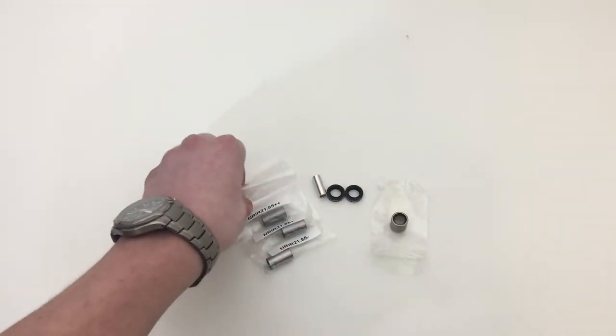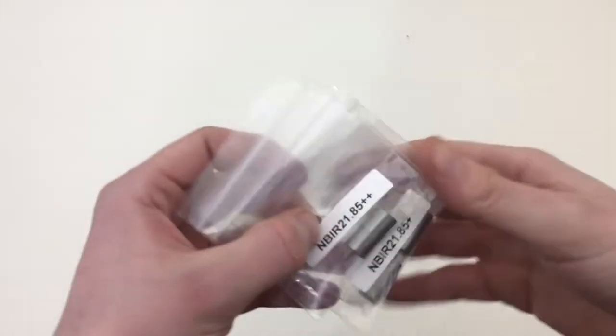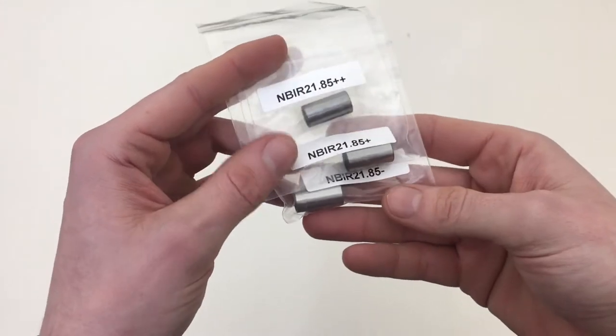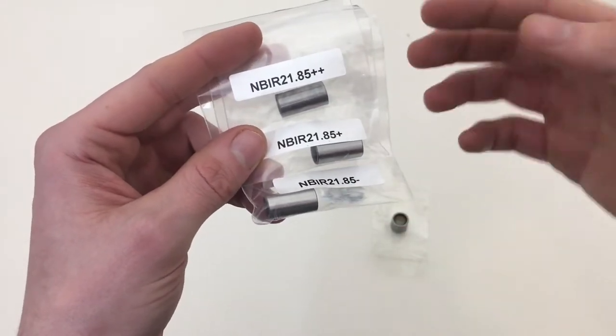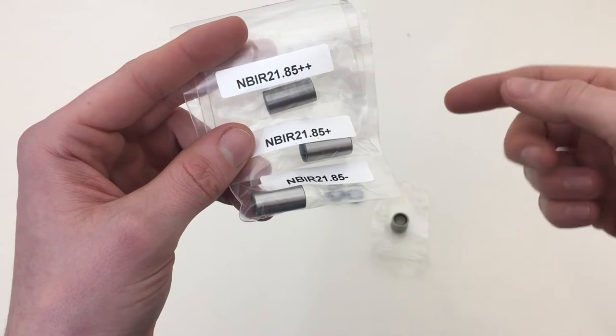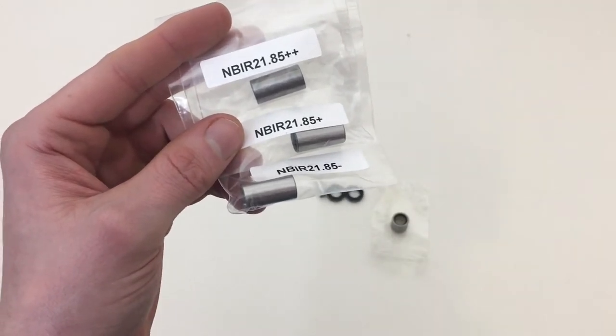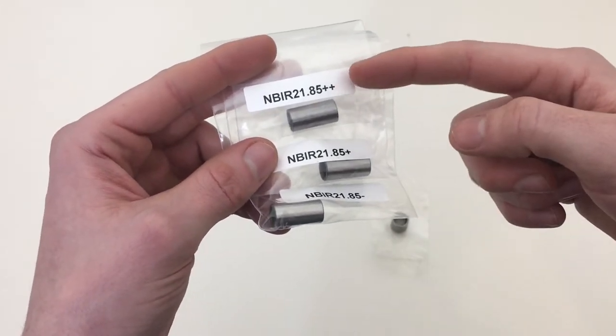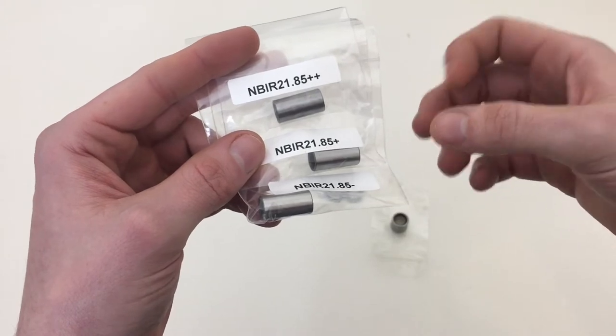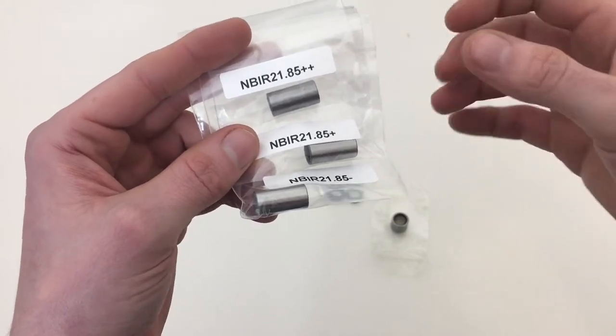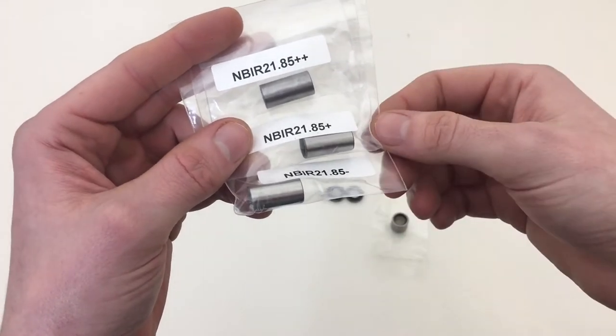Then you've got the inner pins or axles. You can see there's three of them. The reason you get three is because obviously there's tolerance differences. So you basically start with the plus-plus and see if it fits into the needle bearing smoothly. It doesn't have any binding issues.